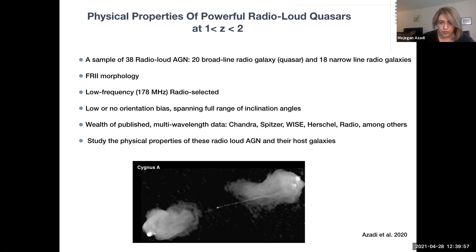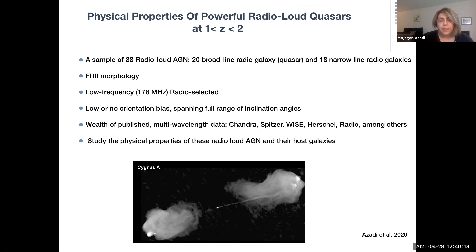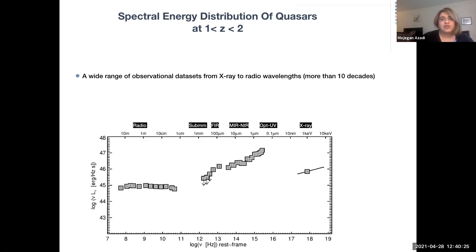All of these sources have FR2 morphology, meaning they are brightest at the edges, while FR1 sources are brightest towards the center. There is a wealth of observations for this sample: X-ray data from Chandra, UV and optical data, IR data from Spitzer, Herschel, and multi-frequency radio data. I used this multi-wavelength data to constrain these AGN and their host galaxy properties using spectral energy distribution, or SED, modeling. This is an SED plot for one of the quasars in my sample, shown in log(νF_ν) versus log(ν) space, extending more than 10 decades from radio bands on the left to X-ray on the right.